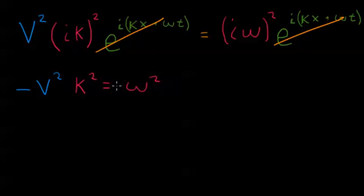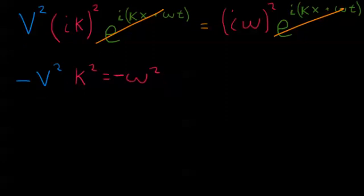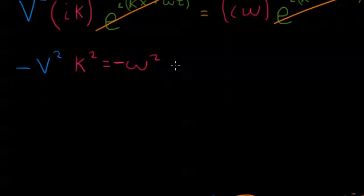So we have v squared k squared equals negative omega squared. Or sorry, negative v squared k squared equals negative omega squared. So if we divide both sides or multiply both sides by negative 1, either of those.